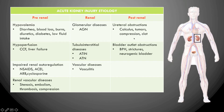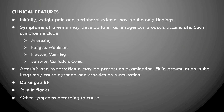Post-renal causes occur after the kidney — obstructions in the ureter, bladder, or urethra such as ureteral calculi, tumors, compressions, blood clots, or bladder outlet obstructions. Benign prostatic hypertrophy can prevent the bladder from emptying, and strictures in the urethra or neurogenic bladder can prevent effective urine expulsion.